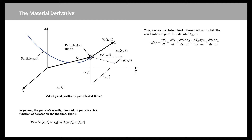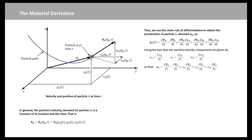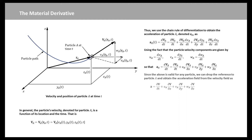Using the fact that the particle velocity components are given by Ua, Va, and Wa, this equation becomes this expression. Since the above is valid for any particle, we can drop the reference to particle A and obtain the acceleration field from the velocity field as this equation.